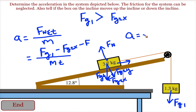Our acceleration formula would now be force of gravity 2 in the x, that's what's trying to get us to go down the incline, minus the force of friction, minus the force of gravity 1, divided by the total mass of the system.